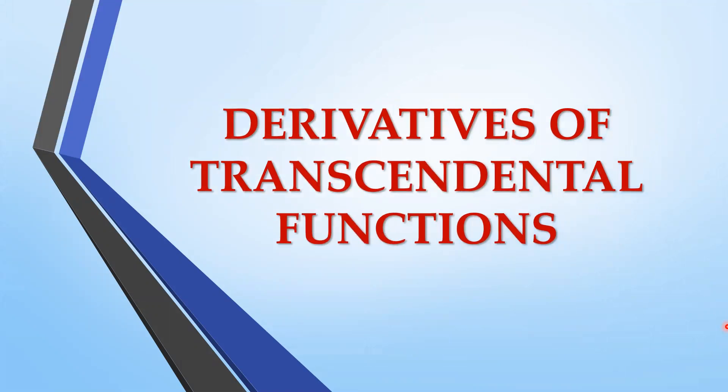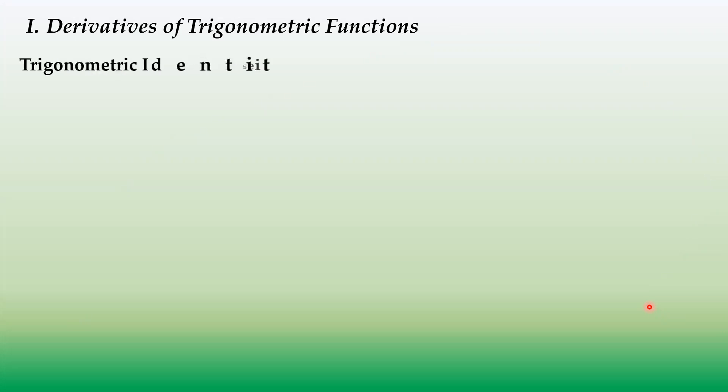We have the derivatives of transcendental functions, starting with the derivative of trigonometric functions. Before we proceed with the formulas, let's review the different trigonometric identities, because we will apply them in simplifying derivatives. You can differentiate first and then simplify using identities, or simplify first using identities and then differentiate.